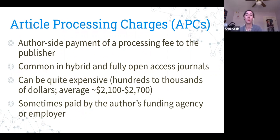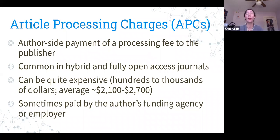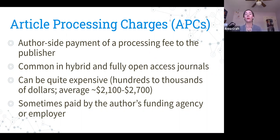A hybrid journal is one that's traditionally closed but allows authors to opt into open access by paying an APC on a case-by-case basis. Fully open access journals have all content available openly; many are funded through APCs, though some don't charge authors at all. APCs can be very expensive — in the hundreds, but more commonly in the thousands of dollars. The literature says the average is about $2,100 to $2,700, though in practice it's often around $3,000.